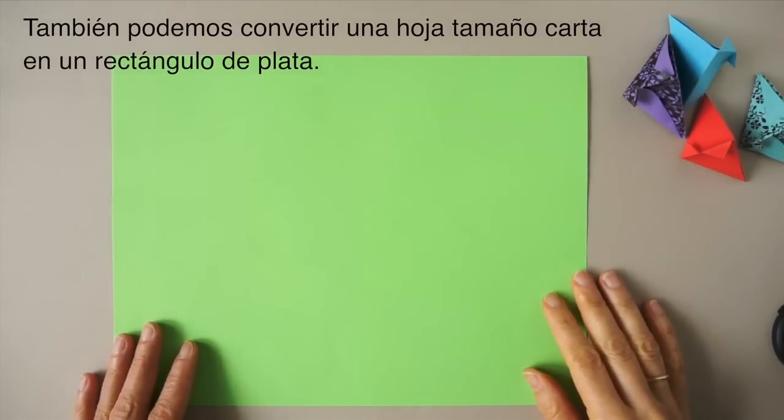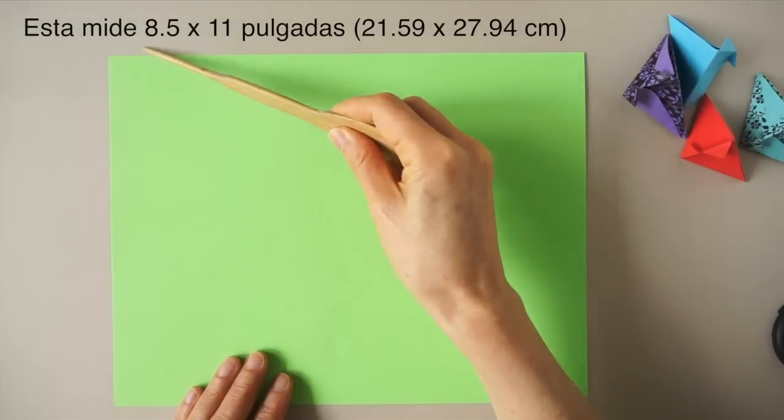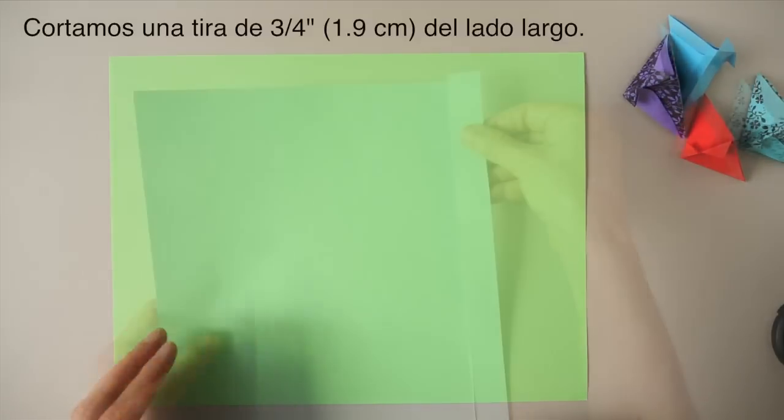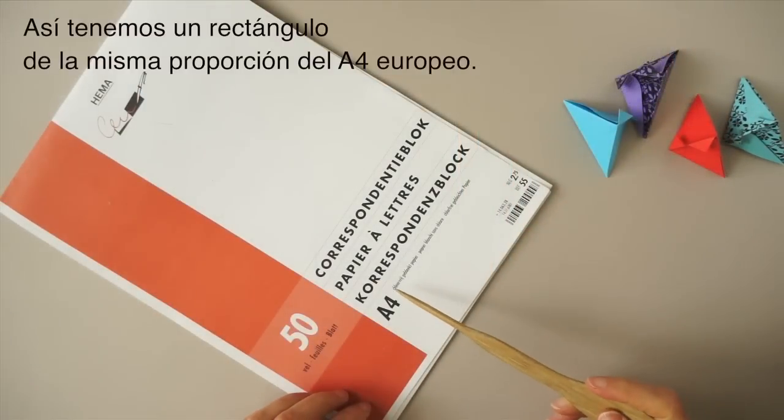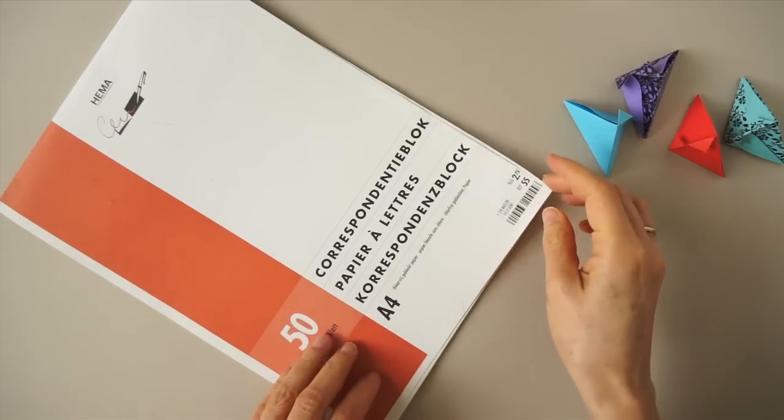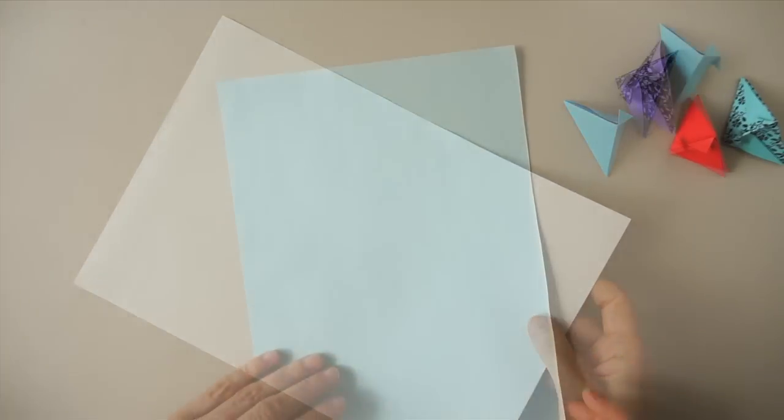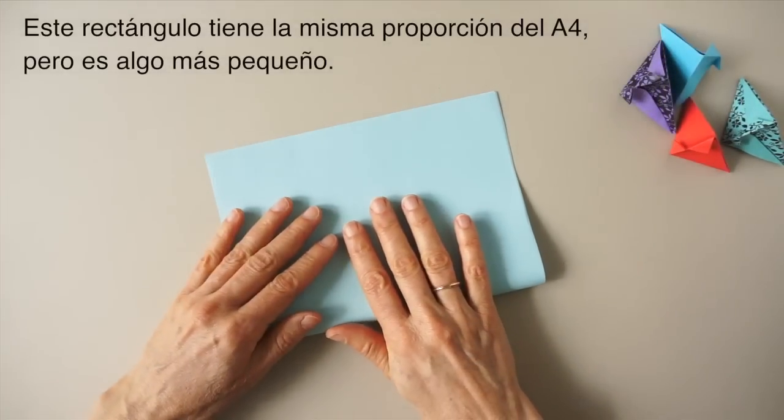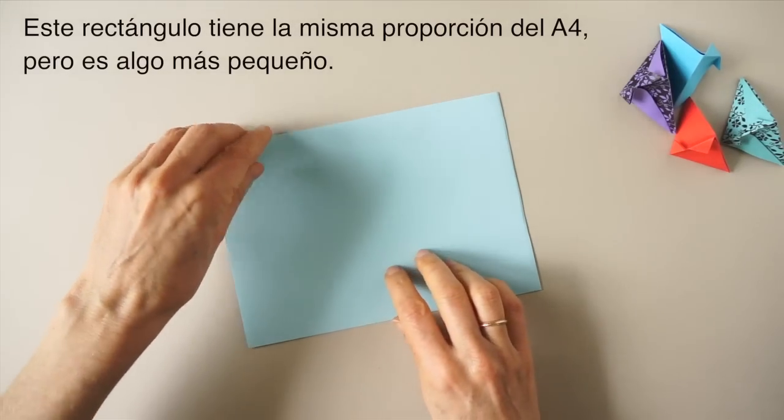Also, we can cut a letter size paper into a silver rectangle. This is 8.5 by 11 inch. We take 3 quarters of an inch off the longest side. We then have the same proportion as A4, which is European letter size paper. So this rectangle is the same in proportion, but a little smaller in size.